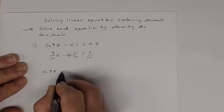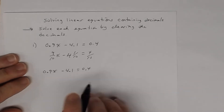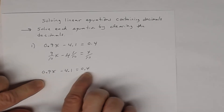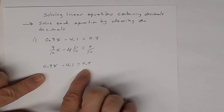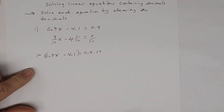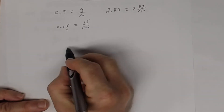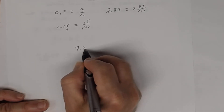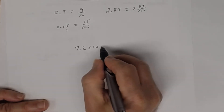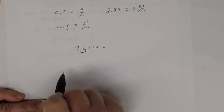Starting with the decimal equation 0.9x − 4.1 = 0.4, I multiply both sides by 10. Remember, multiplying by 10 moves the decimal point one place to the right — so 7.2 × 10 = 72. Multiplying by 100 moves it two places, giving 720; multiplying by 1,000 moves it three places.